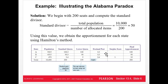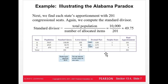So before, with 200 seats, C had 10 seats. After increasing to 201 seats, C only has 9. B and A both had 90 and 100 respectively, and now they have 91 and 101 — they both gained a seat, but C lost one. It's basically like A and B gained the extra seat while C lost a seat, even though nothing else happened other than the way the division worked out with different decimals.